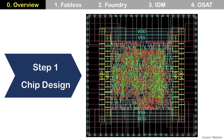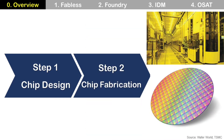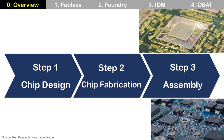Step one is chip design. This is a process to create an IC pattern by making electronic components and their interconnections. Step two is chip fabrication. This process is to fabricate the IC on a wafer based on the design by fabless companies.